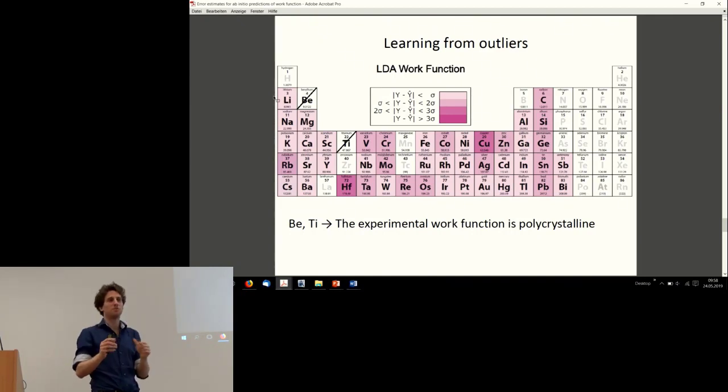In the case of work functions, work functions in particular are predicted fairly accurately with density functional theory, both LDA and PBE. But there were two annoying little materials: beryllium and titanium. For those two, the deviation between DFT and experimental was very large. We thought long and hard about where is this coming from, and eventually we had to conclude the experimental data that's out there—and the data was very sparse in the case of those two materials—is probably not accurate, or at least it's not accurate with how we are comparing it to our DFT results because the experimental data was polycrystalline. In those cases we had to throw them out as outliers.